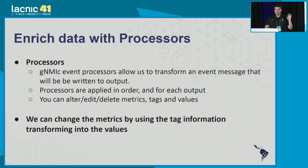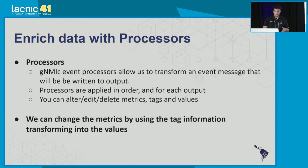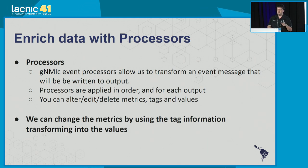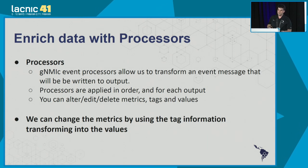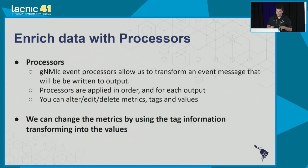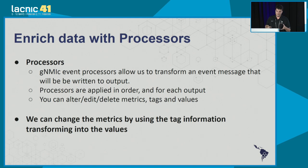You can also use processors not just for transformation, but to create aggregate values. For example, if you see a logical interface go down at the same time as a physical interface, you can create something in the processor that correlates the physical interface information with the logical interface and shows this as one single event because they are related — not just enriching the data, but showing what's happening in a cleaner way.